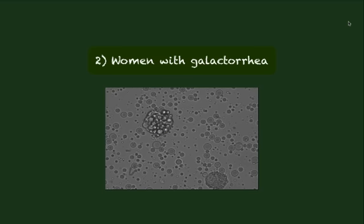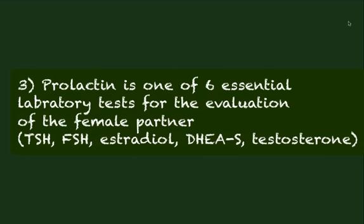In the third case, you might want to measure prolactin in a woman who is experiencing infertility, since prolactin is one of six essential laboratory tests for the evaluation of the female partner, along with TSH, FSH, estradiol, DHEAS, and testosterone. As shown in this figure, milk globules can be seen in a microscopic image of the secretions taken from a woman with galactorrhea.